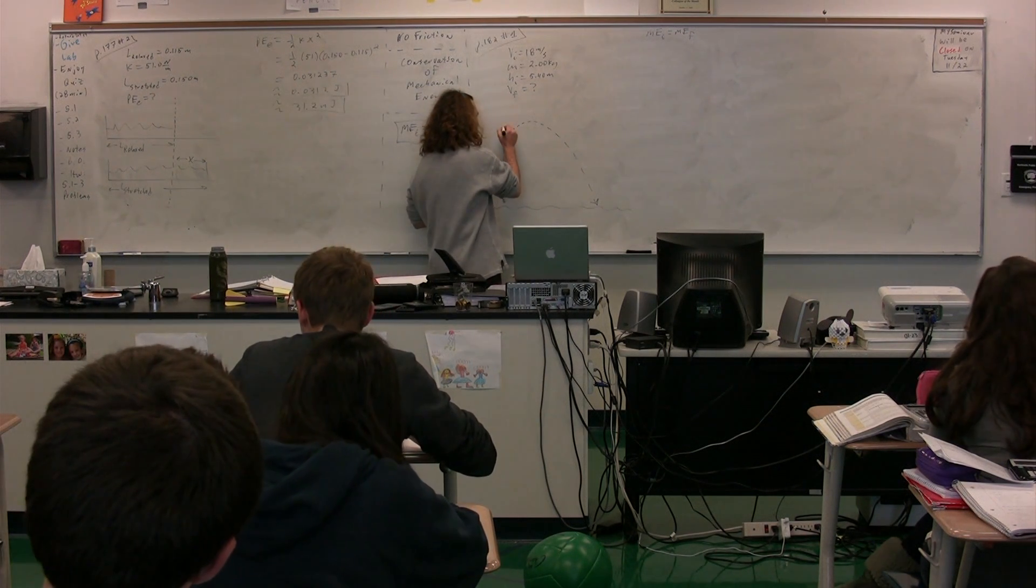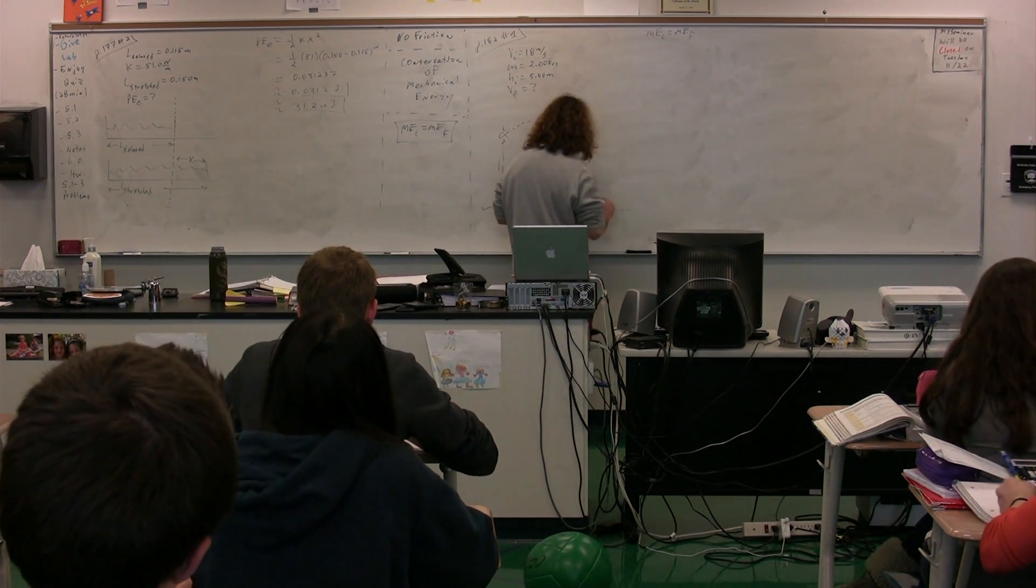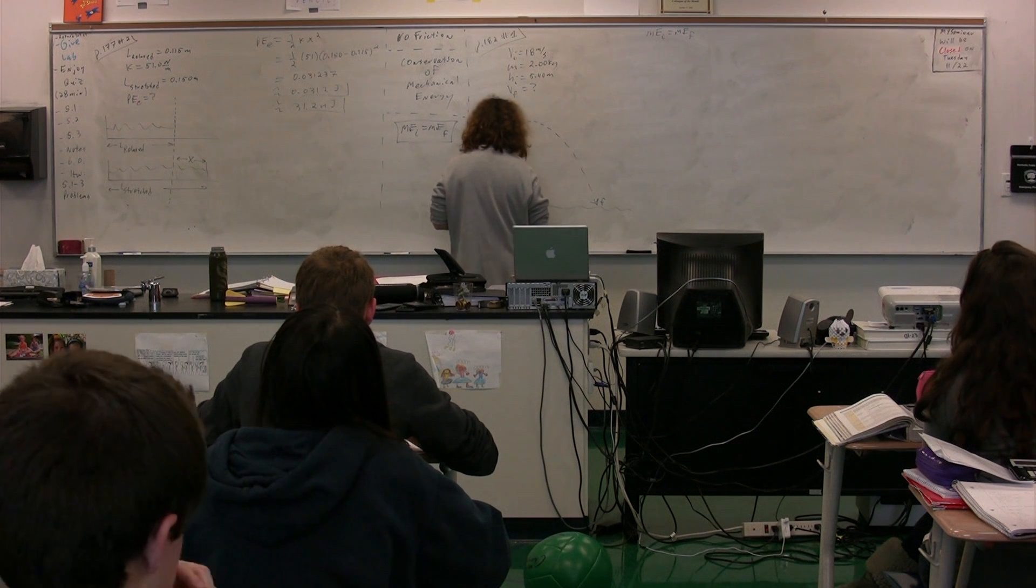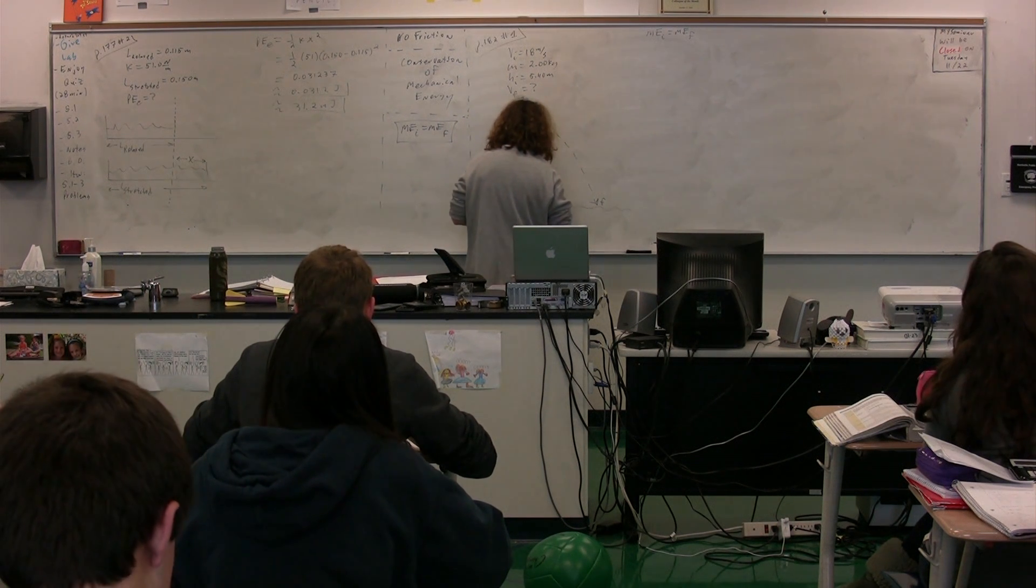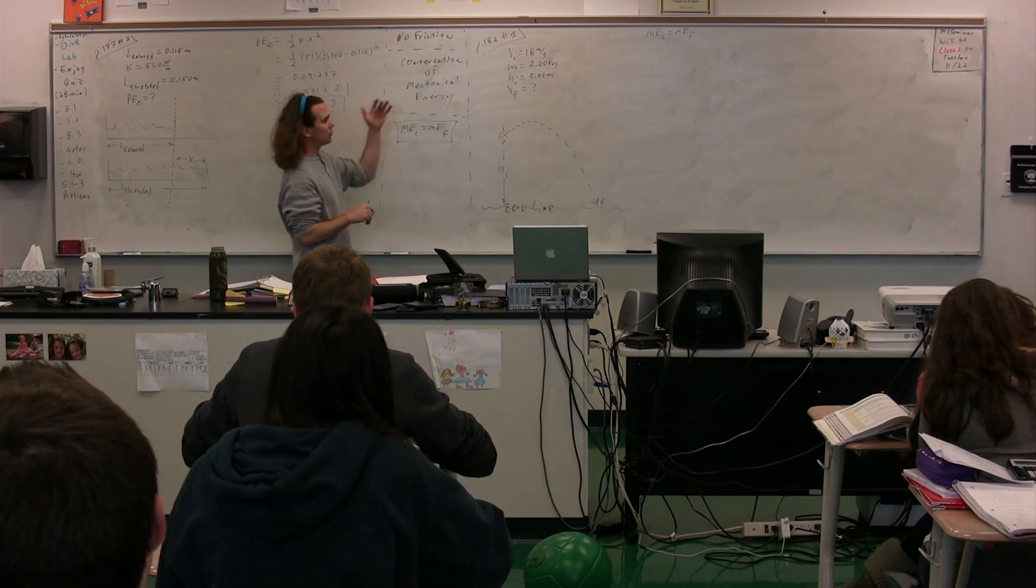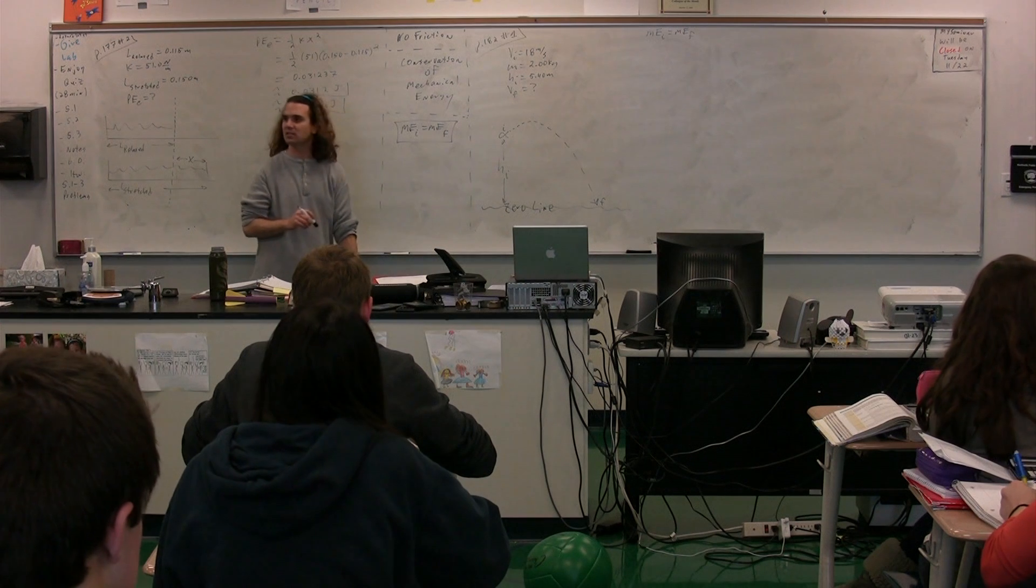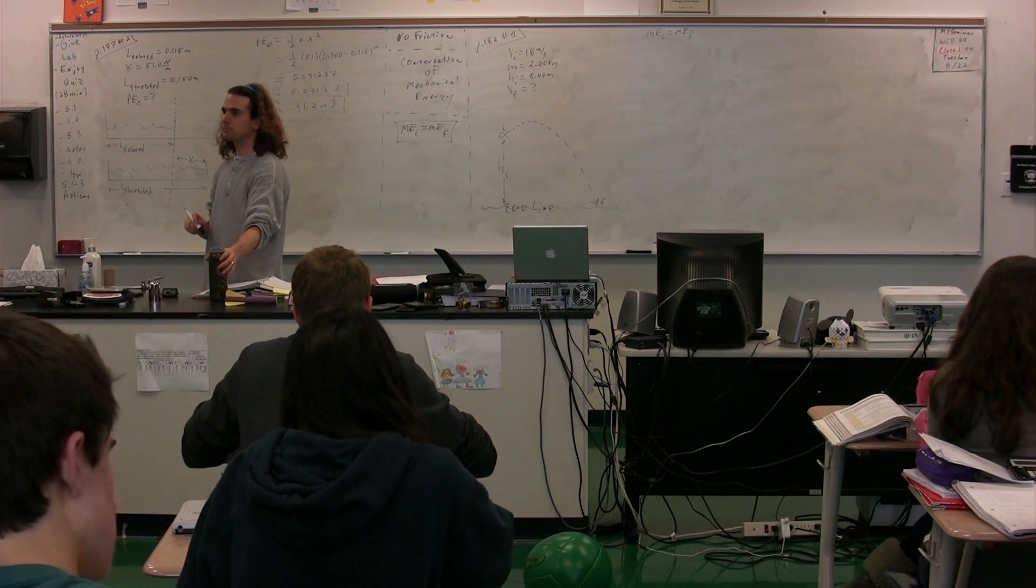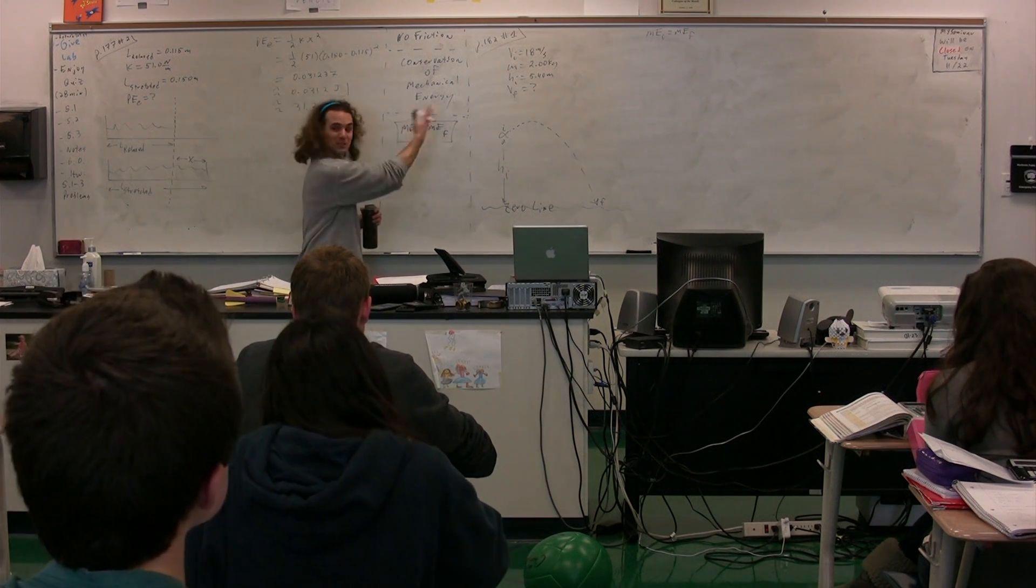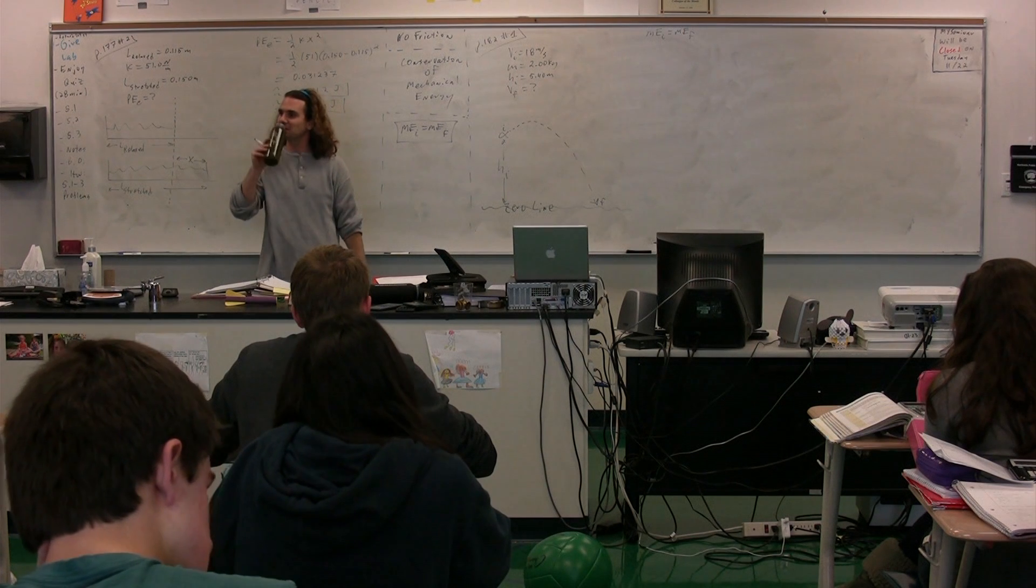So our initial point is right here in the picture. Our final point is right here in the picture, right before it strikes the water. And our zero line is our horizontal line, which we will set at the surface of the water. So we usually identify our initial and final points and the zero line in the picture, because it's easiest to identify that way. Pictures are a great way to describe them.